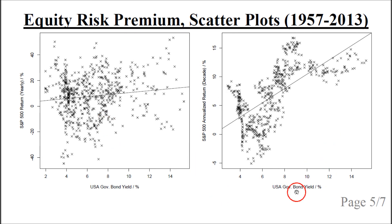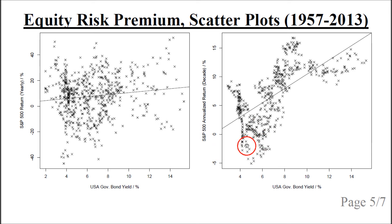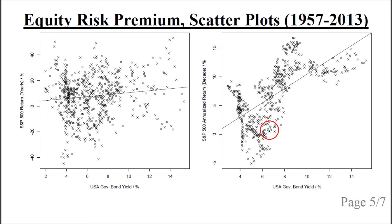The right scatterplot shows the annualized rate of return for holding the S&P 500 for a decade. The US government bond yield again goes from 2% to more than 14%, while the annualized decade return ranges from minus 5% to more than plus 15%. There is a more complex relationship here: when the government bond yield is low, the S&P 500 annualized return tends to be low or even negative; when the bond yield is high, the S&P 500 return tends to be high. However, it is not a simple linear relationship — a straight line does not fit well.